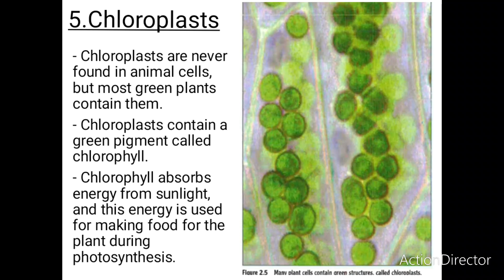Chloroplasts are only found in green plants; animal cells do not have chloroplasts. Chloroplasts contain a green pigment called chlorophyll, and chlorophyll absorbs energy from sunlight and uses this energy to make food for the plant during photosynthesis. This is what a chloroplast looks like under a microscope. The main function of a chloroplast is to photosynthesize.